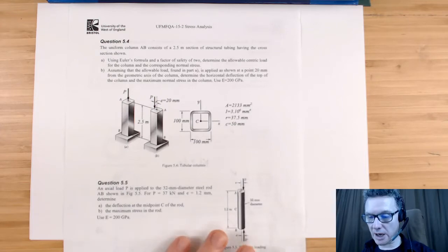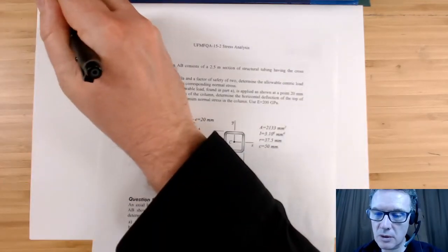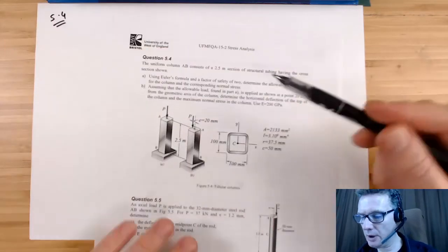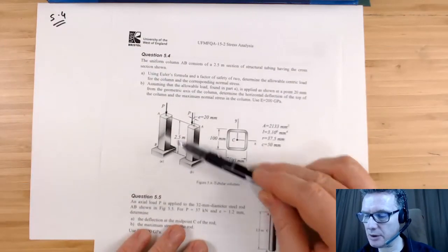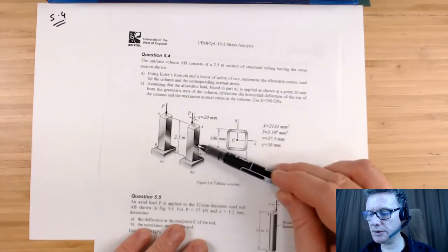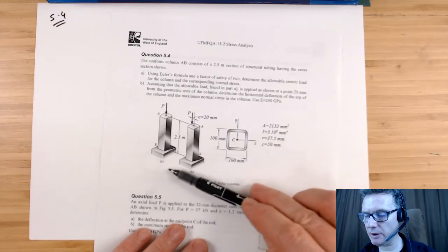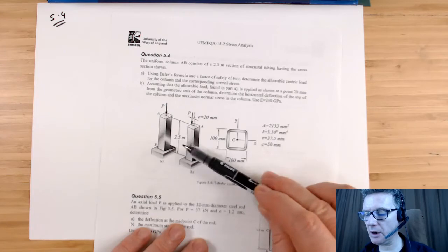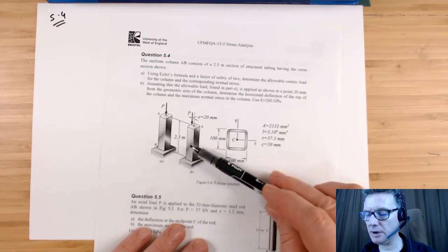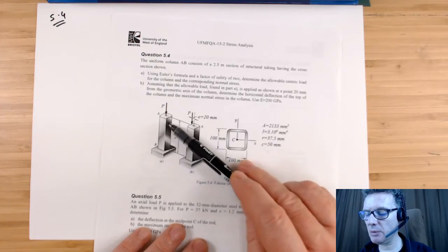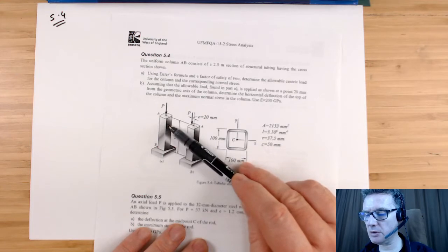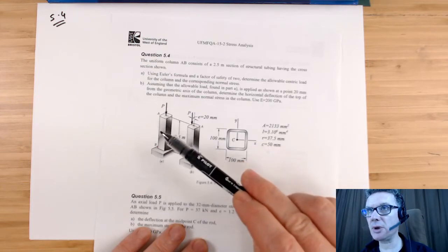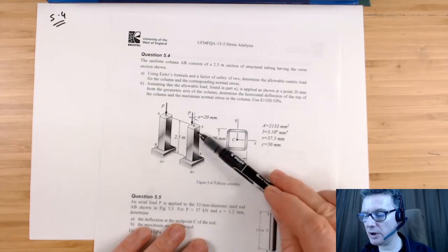Okay so let's have a look at 5.4. First of all it's a bad diagram because it looks like these are two columns sitting next to one another, but they're not. They're the same individual column, but we're applying the load slightly differently. The first one we're applying the load bang in the middle, nice in the centroid, in the neutral axis. And here we're going to offset it.